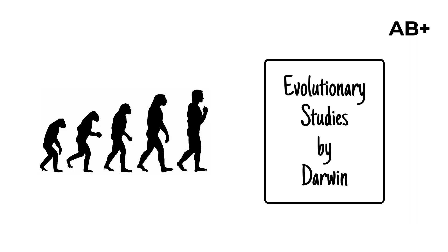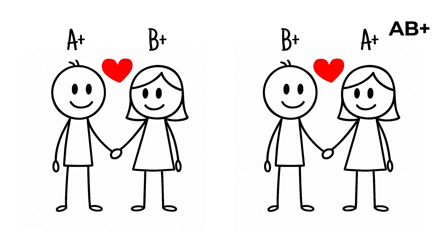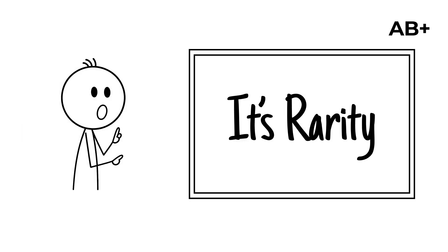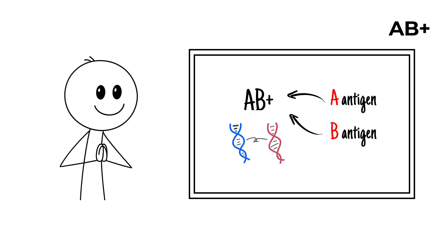Evolutionary studies suggest that AB is the youngest blood type, emerging only a few thousand years ago through the mixing of A and B populations. Its rarity makes it valuable to researchers studying genetic diversity, since it represents a blending of two distinct antigen systems into one.